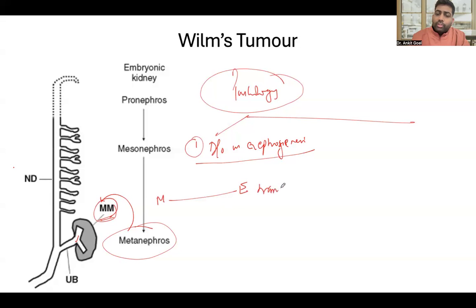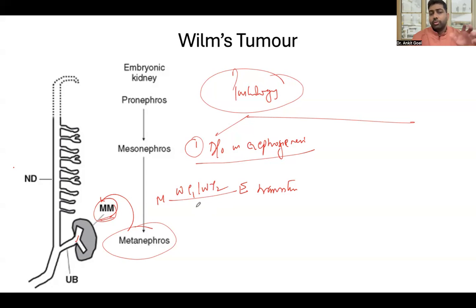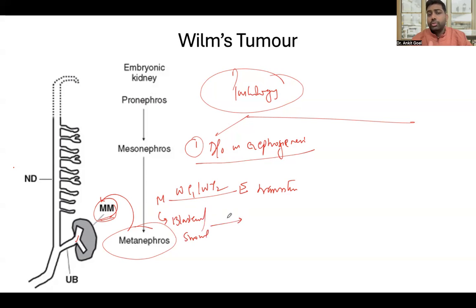This mesenchymal to epithelial transition is under the influence of certain genes — for example, WT1 and WT2 genes. When there is a mutation in these genes, there is a disruption of this transition. The mesenchymal to epithelial transition does not happen smoothly, so the cells are disorganized. The cells of the mesenchyme — the blastomal cells and stromal cells — don't completely transform into epithelial cells. You find an array of blastomal, stromal, and epithelial cells scattered in the tissue. This is one important pathology of the origin of the Wilms tumor.